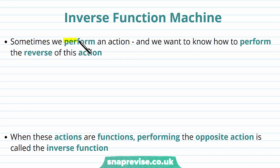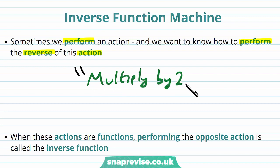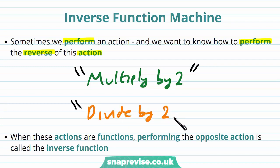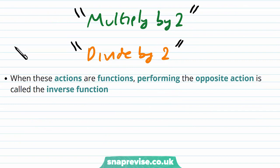Sometimes we perform an action and we want to know how to perform the reverse of this action. Let's say we have the action multiply by 2. The reverse of this action is to divide by 2. When these actions are functions, performing the opposite action is called the inverse function.